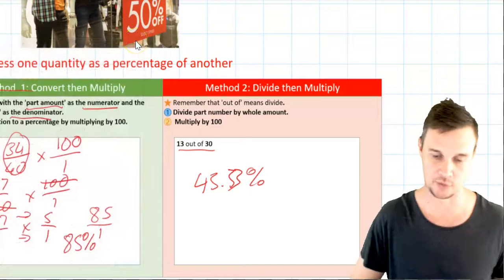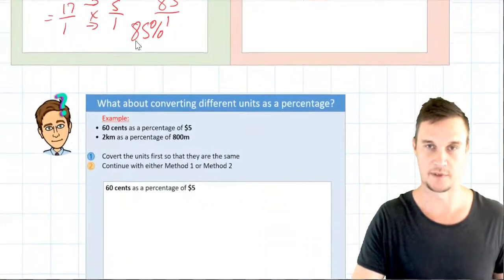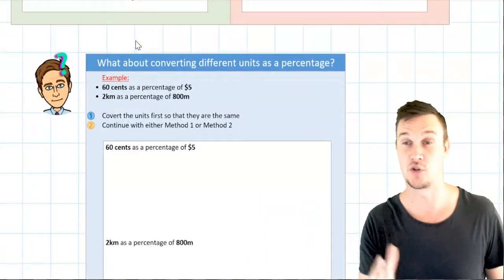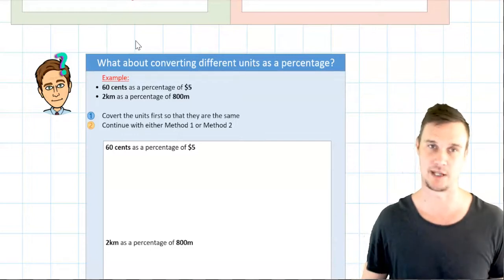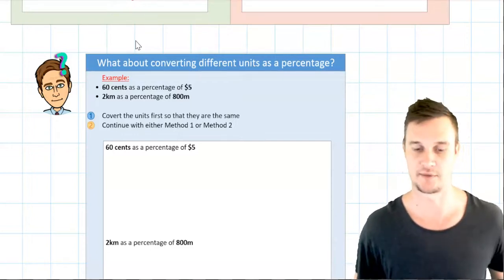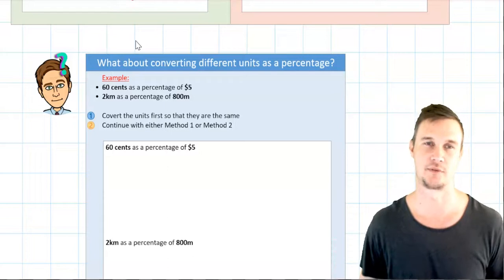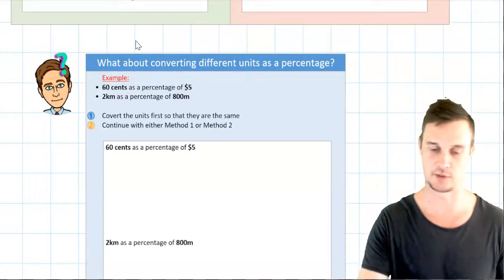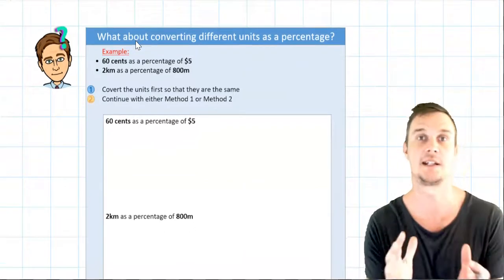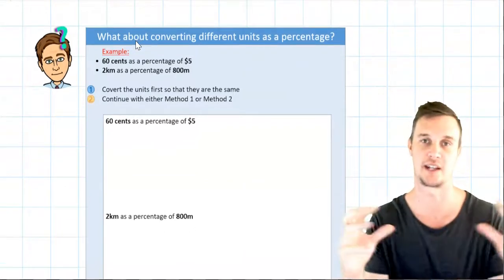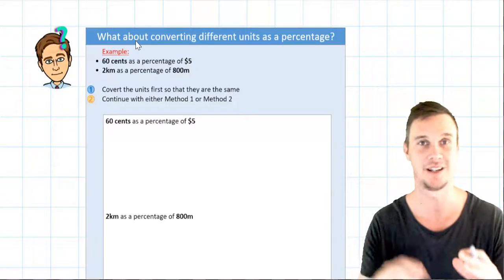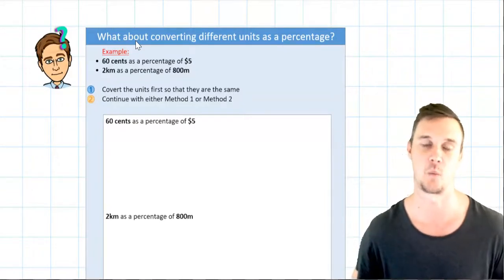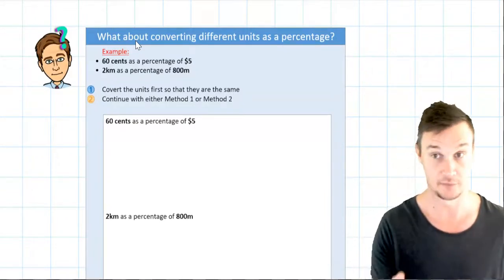Now we're going to look at what happens if we have to convert different units. So what if we have different units and we need to convert to them as a percentage. So the examples are there. If I have 60 cents as a percentage of five dollars or two kilometers as a percentage of eight hundred dollars, and the two steps you're going to do. Firstly you need to make sure you convert the units so they are the same measurement or the same unit.